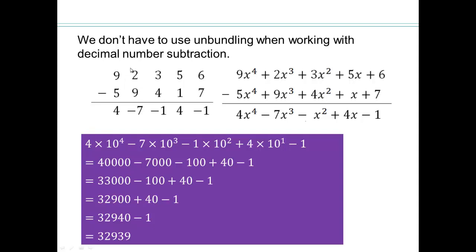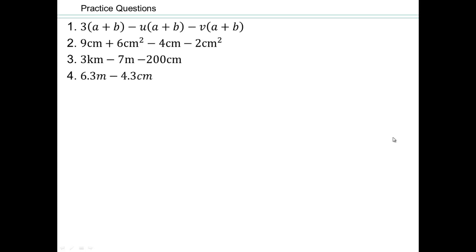So we don't have to unbundle, but if you unbundle, the number that is here is your answer. If you make sure that all these digits are positive, then we can read off the decimal number. We wanted to show you how they really are parallel structures between decimal numbers and polynomials. Let's do some practice questions here. Pause the video and then we'll discuss it.